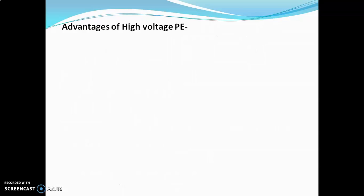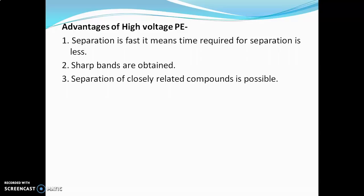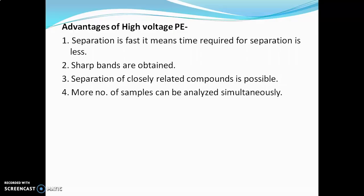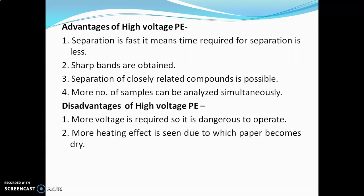Advantages of high voltage paper electrophoresis: separation is fast, meaning less time is required compared to the low voltage technique. Sharp bands are obtained, and separation of closely related compounds is possible. More samples can be analyzed simultaneously. Disadvantages: more voltage is required, making it dangerous to operate since around 10,000 volts is used. Additionally, more heating effect is seen, which causes the paper to become dry.